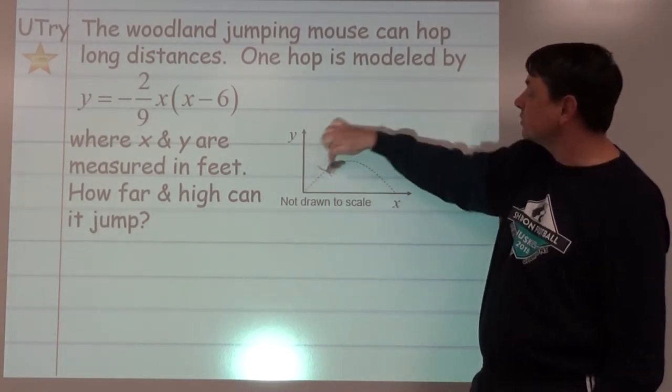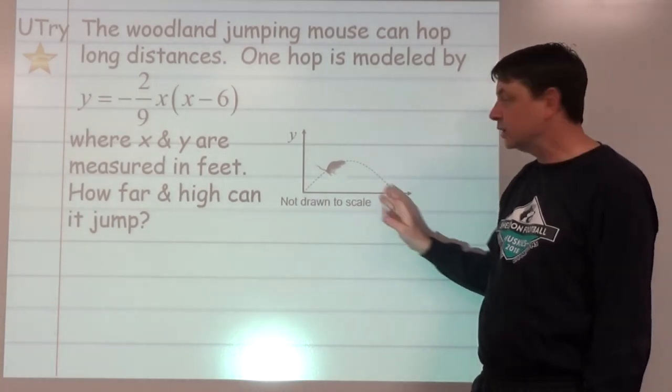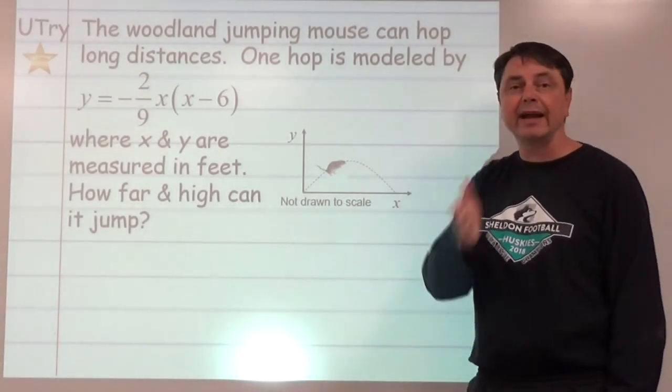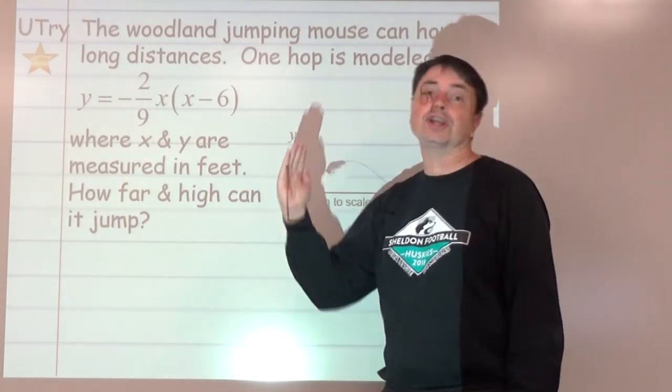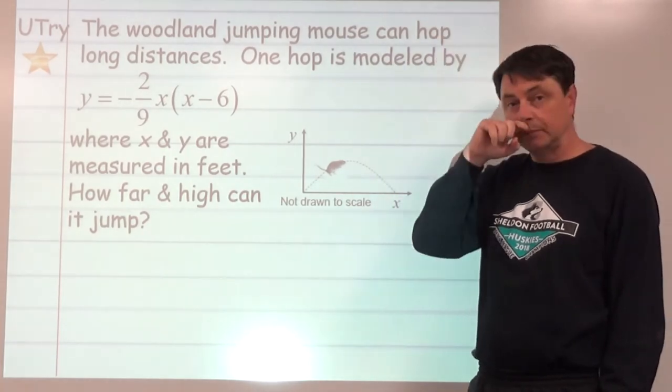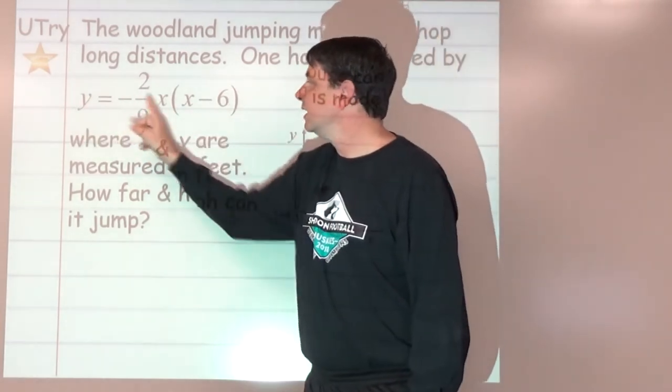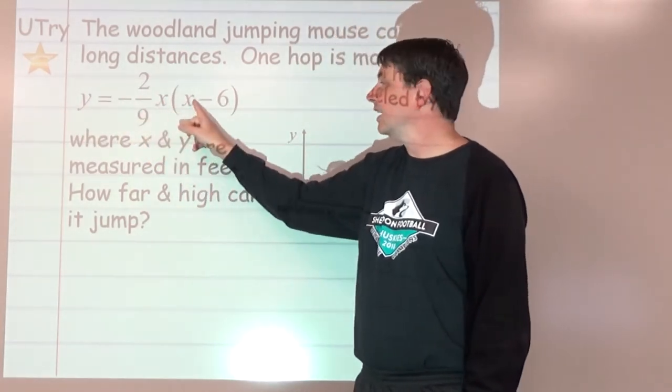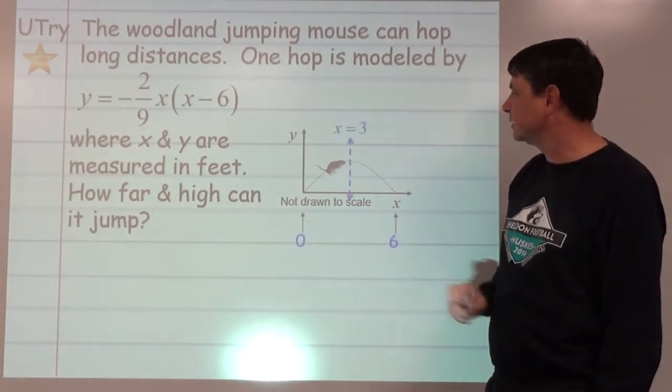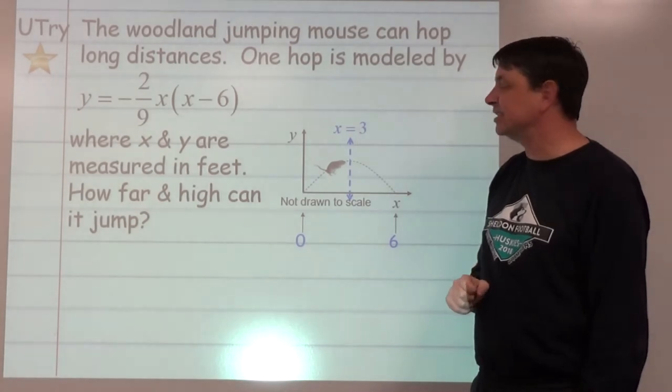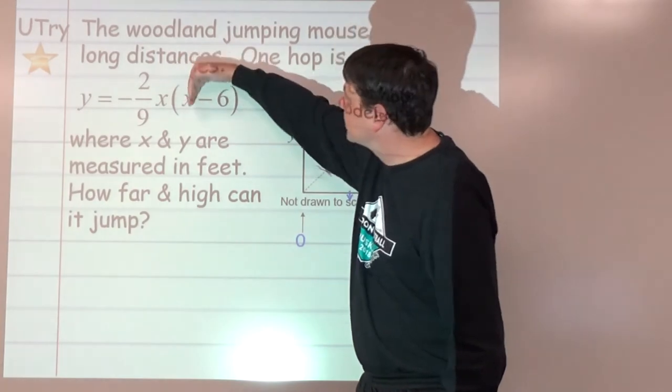Now about the how high, which is going to be right here. We want to know the y-coordinate. First of all, what's the x-coordinate? If this is 0 and that's 6, what's halfway in between? That's going to be our axis: 3. So as it's jumped 3 feet, that's when it's going to reach its maximum height. Now what is that maximum height? We're going to have to plug in to get the y. We're going to plug in a 3 here and here.